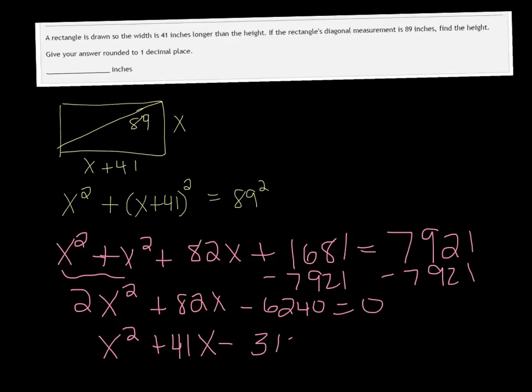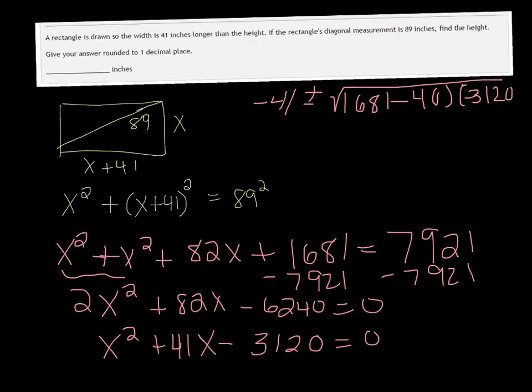So, it may or may not factor. I think the easiest thing to do is just go ahead and use the quadratic formula. So, it would be negative b, which is negative 41, plus or minus the square root of b squared, which is 1681. Alright, minus 4 times a times c. So, a is 1, and c is negative 3120. All over 2a, which is just 2.